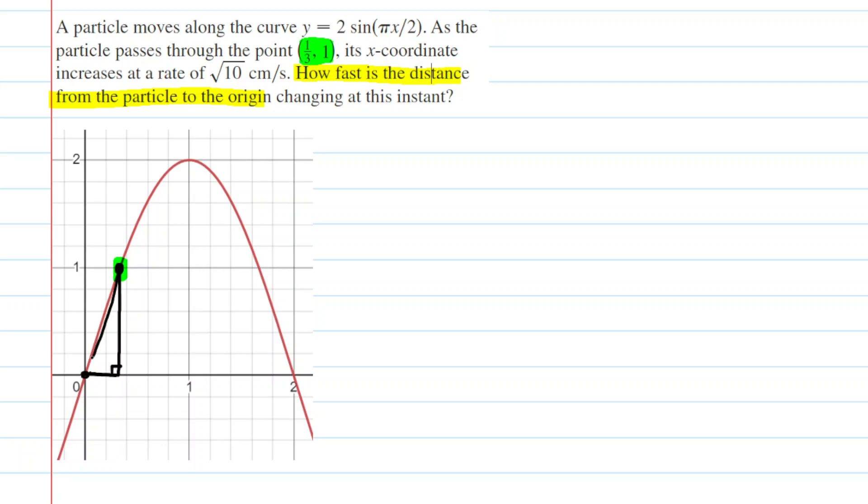And the reason that's effective is because the coordinates of that particle are x, y, meaning that this horizontal segment is x and this vertical segment is y. We can call the distance between those two points z. It's basically the hypotenuse of our right triangle.